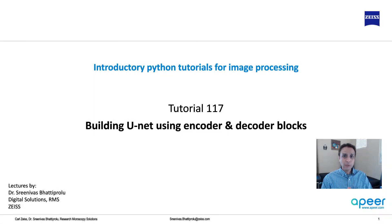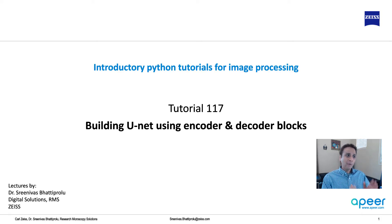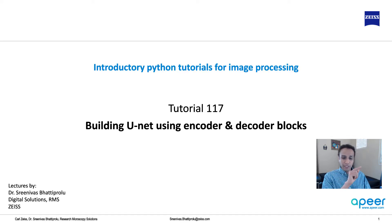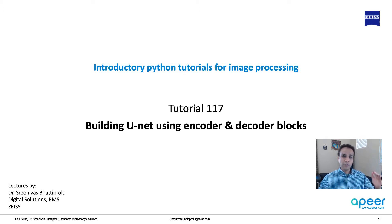Hi everyone, welcome to introductory Python tutorials with a special focus on image processing. In this video, let's have a look at building a U-Net using encoder and decoder blocks. In tutorial 115 we built U-Net by defining every layer — two convolution layers, max pooling, two convolution layers, max pooling, and so on. We realized there are repeating patterns, so how about defining those as separate functions for encoder and decoder and then building a U-Net with just a few lines of code.